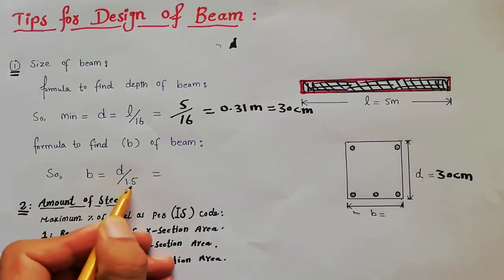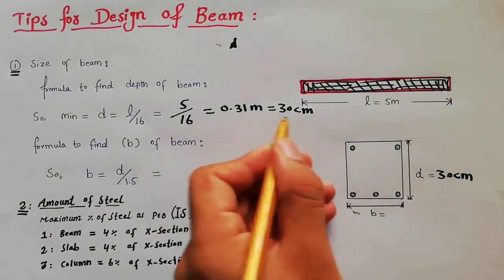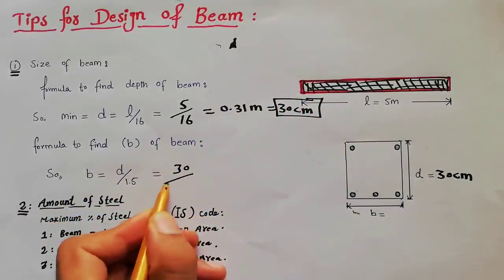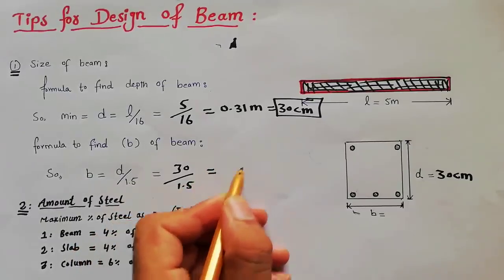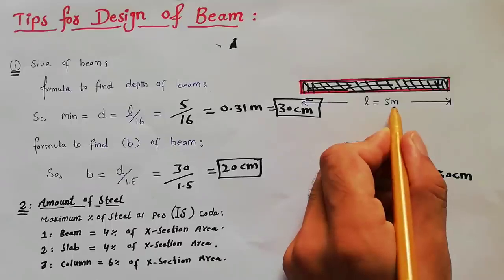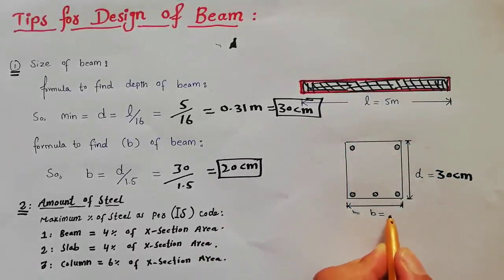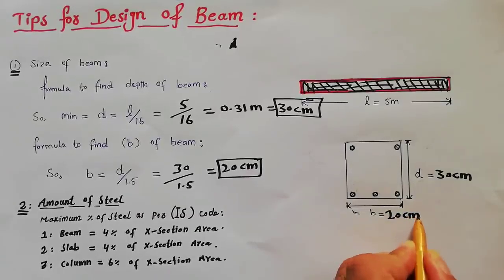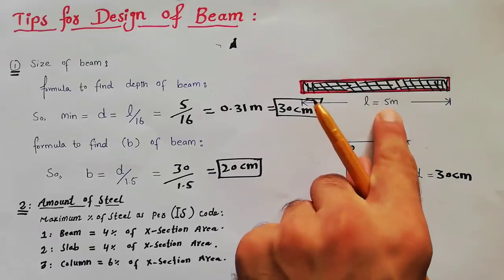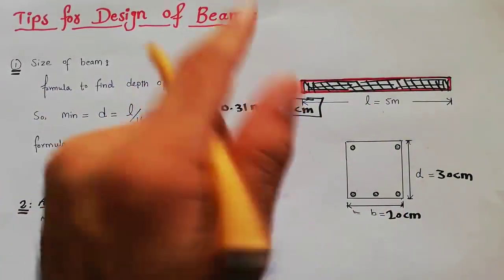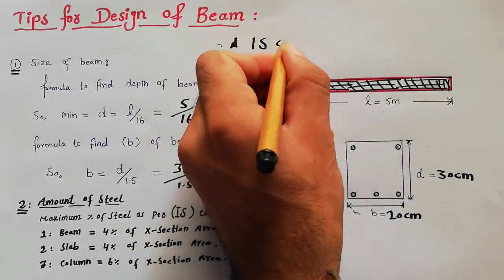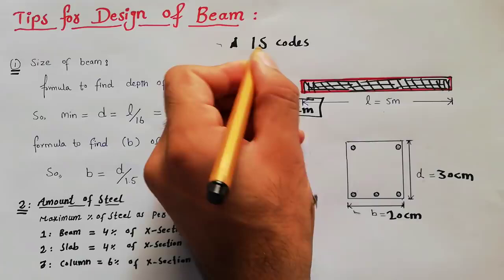Now the formula to find breadth of beam: b = d / 1.5. Since d is already 30 centimeters, breadth = 30 / 1.5 = 20 centimeters. So for a 5-meter length beam, the breadth is 20 centimeters. With these formulas — from IS code, the Indian Standard Code — we can find the size of any beam.